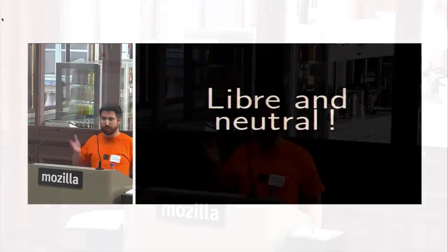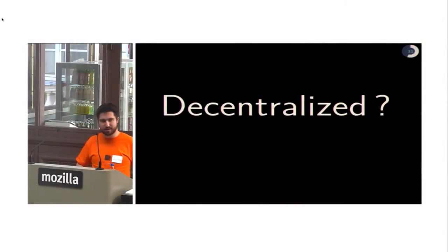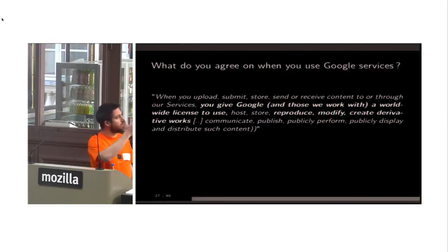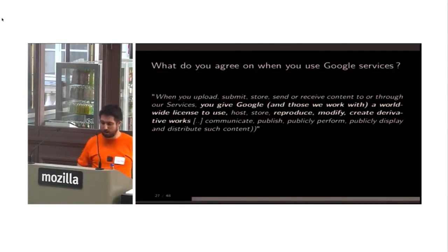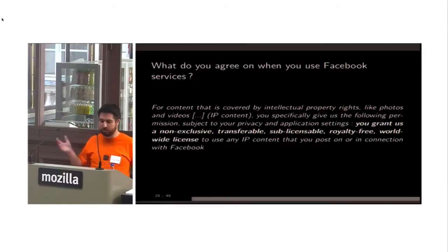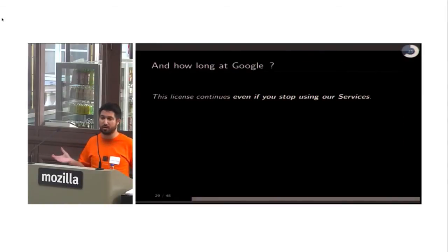The libre and neutral parts are done — no problem. But about decentralization, it's more complicated. If you're still using Facebook, Google, and Skype, nothing has changed on that part. When you use Google services, you agree to give them your data for eternity — non-exclusive, transferable, sublicensable, and so on. It's the terms of service from Facebook and pretty much the same for all the big silos.